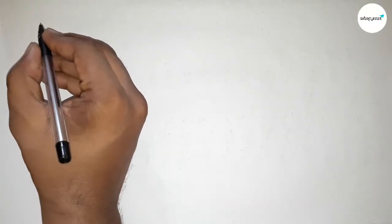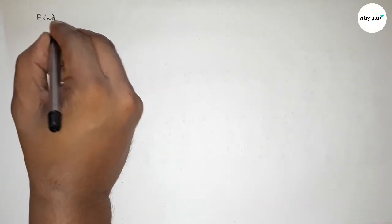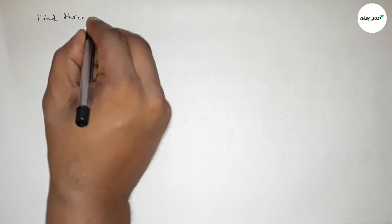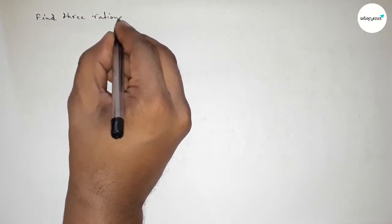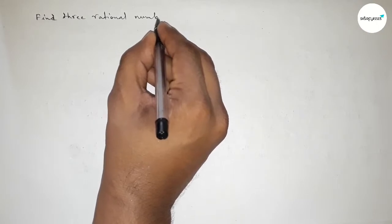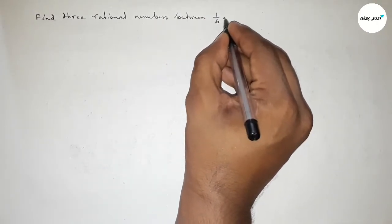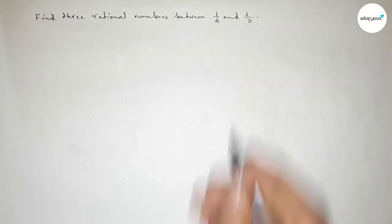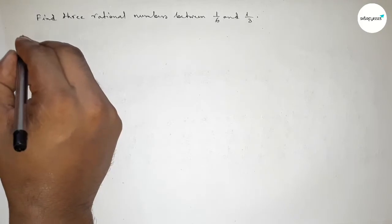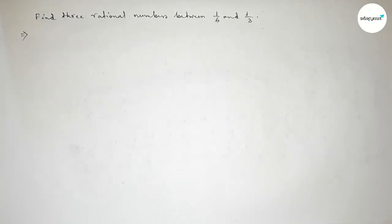Hi everyone, welcome to SI Share Classes. Today in this video we have to find out three rational numbers between 1 over 6 and 1 over 3. So let's start the video. First of all, let's solve this problem.